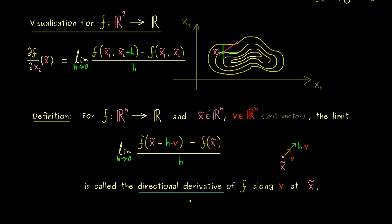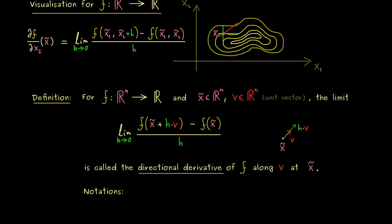More precisely, this is called the directional derivative of f along the vector v at the point x̃. There are many different notations: some people use a curved ∂ with index v, others use a capital D in the same sense. You may also see the nabla symbol with index v to denote the directional derivative along v.